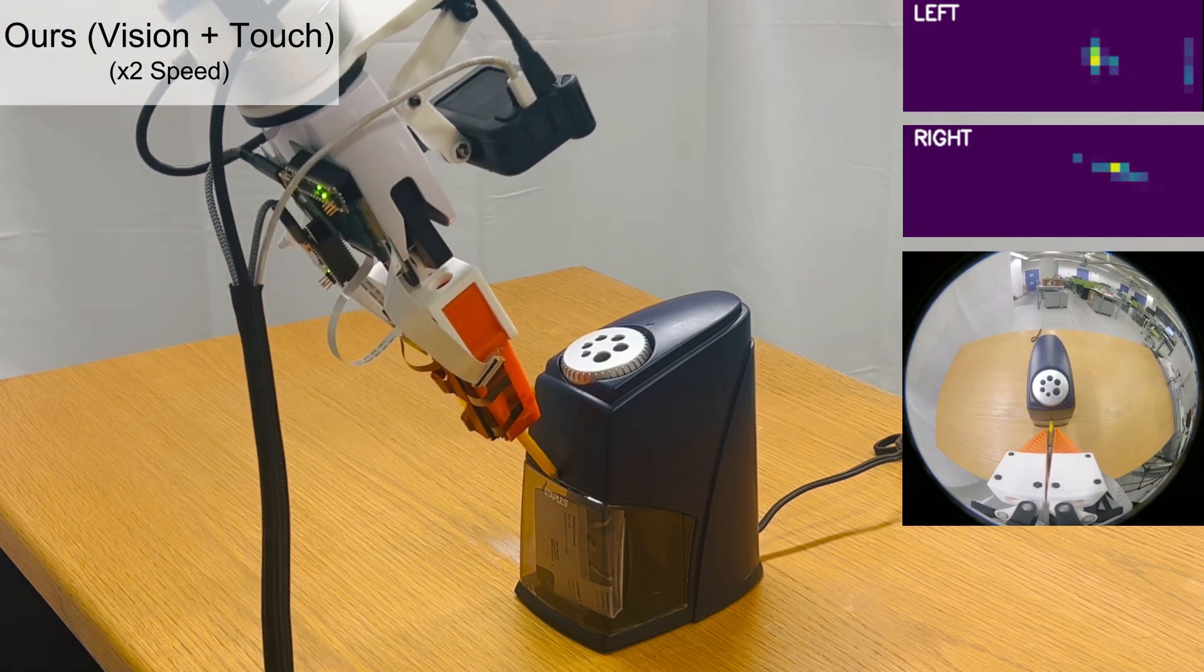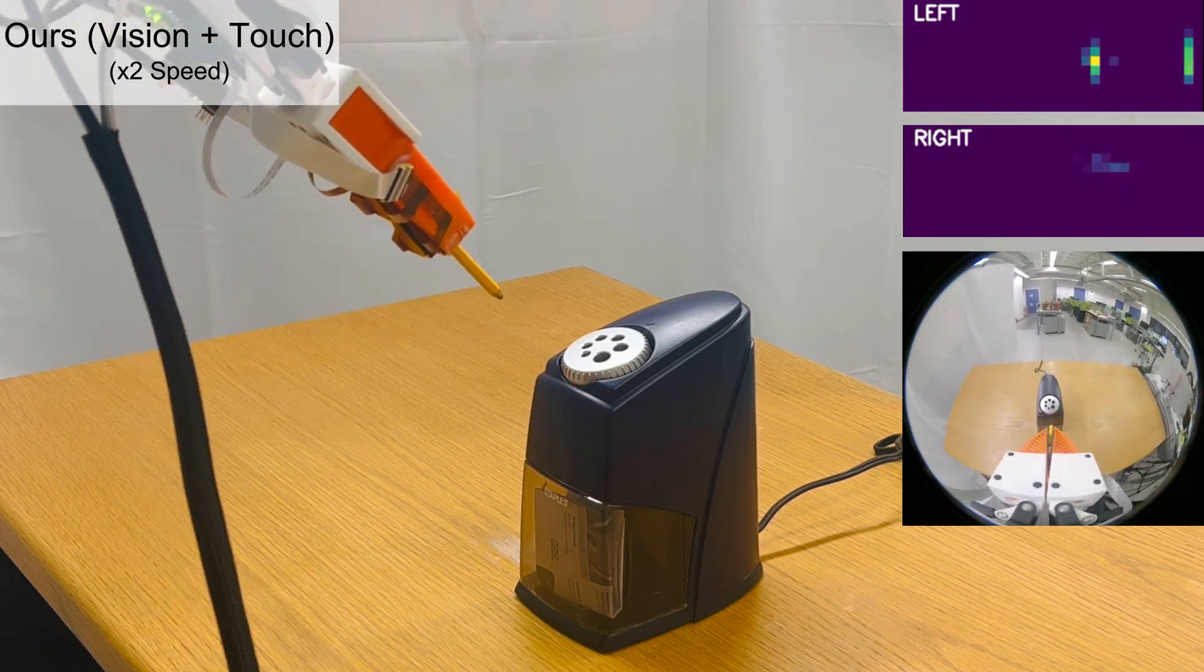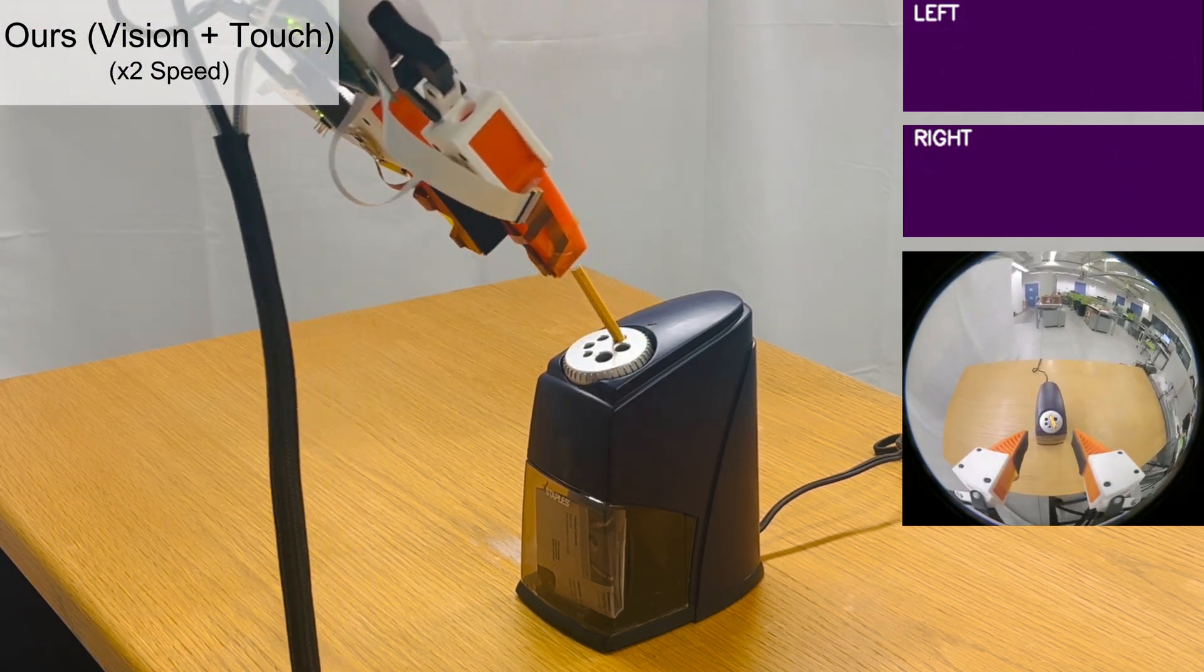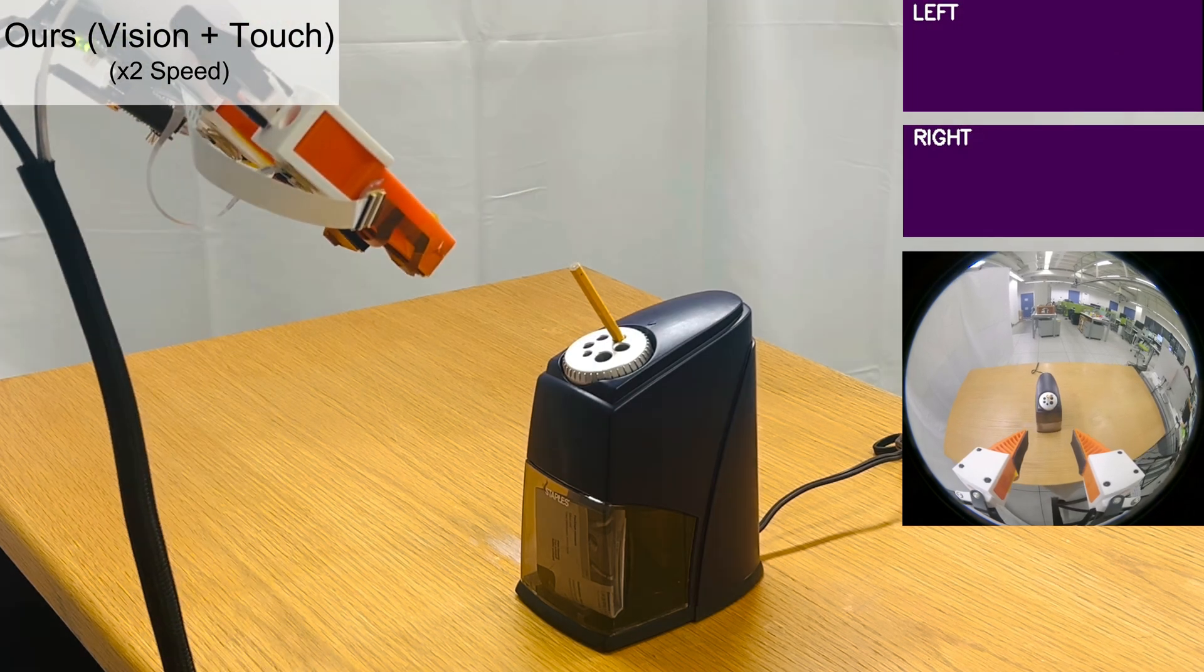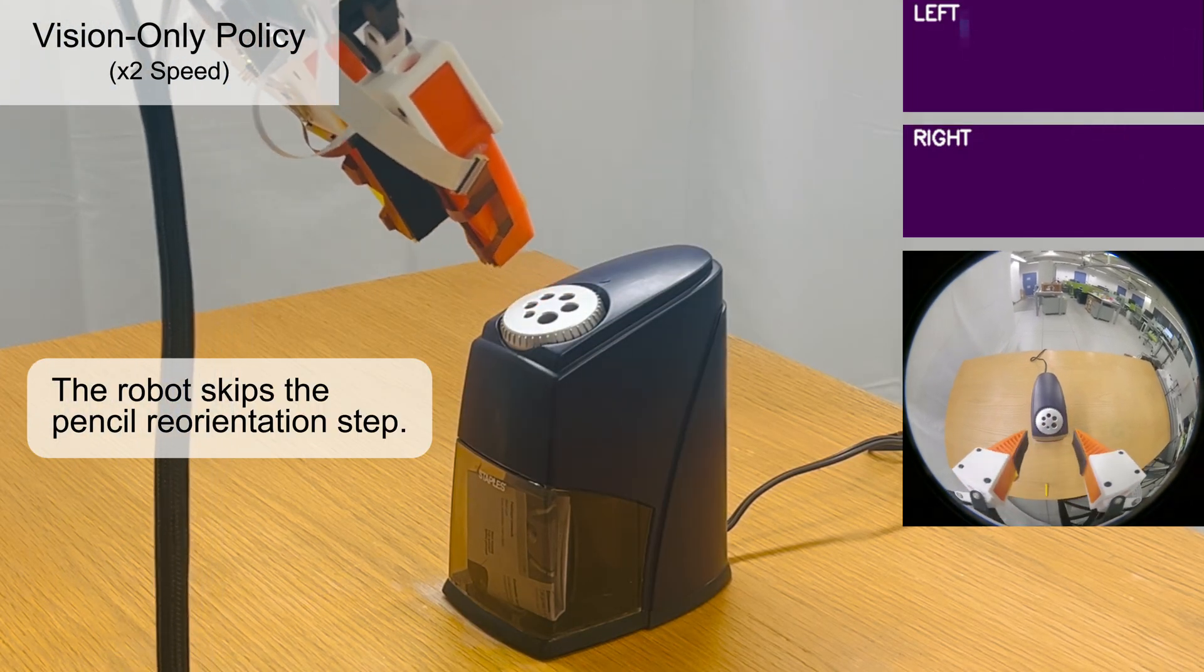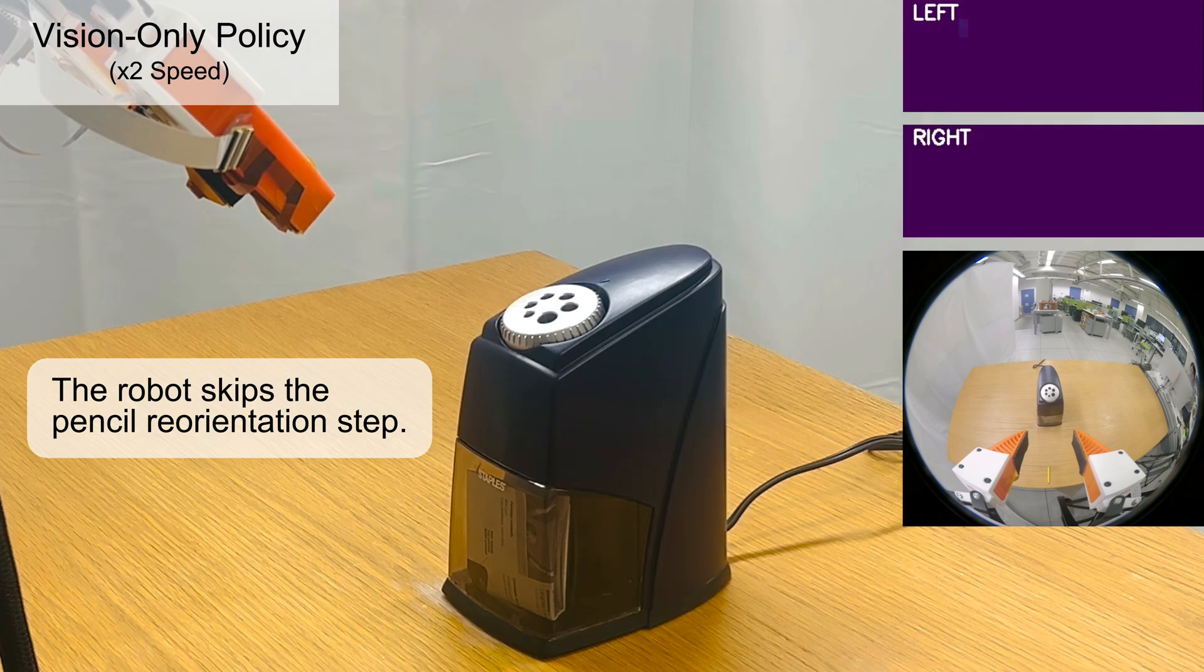In pencil insertion, our policy uses intent feedback to reorient the pencil correctly before insertion. However, the vision-only policy sometimes skips the pencil reorientation step and fails the insertion.